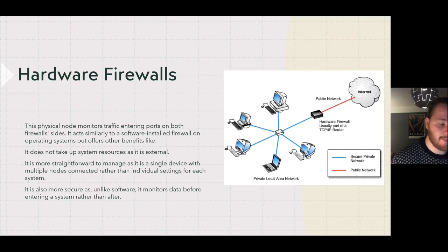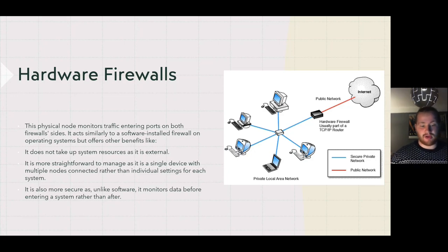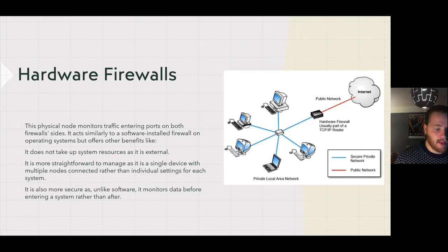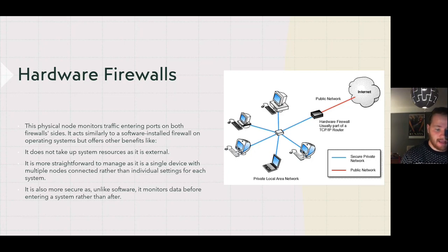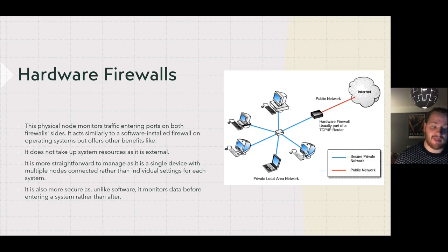Hardware firewalls are a physical device that monitors traffic entering ports for both sides of the firewall. They act similarly to a software firewall installed on an operating system, but offer additional benefits: they do not take up system resources as they are external, they are more straightforward to manage as a single device with multiple nodes connected rather than individual settings for each system, and they are more secure as they monitor data before it enters a system rather than after.